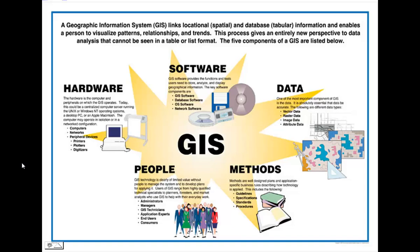We're going to work with crime data, census data, history data — lots of different types of data, because GIS can be used in a lot of different professions and disciplines. Then we'll talk about the methods: things called queries and map creation, and as we get more advanced, geocoding and network analysis.